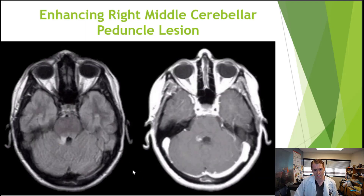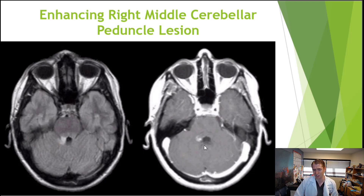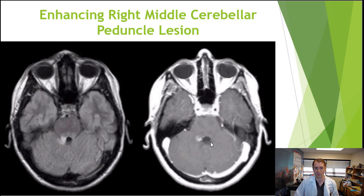Here's another example on a different MRI. You can see this enhancing lesion in the right posterior middle cerebellar peduncle. This could cause symptoms such as tremor, dizziness, or if it involves the sixth cranial nerve nucleus, you could get double vision when looking to the right side.